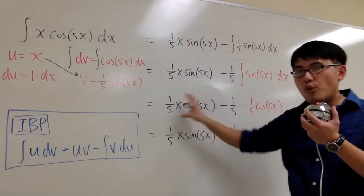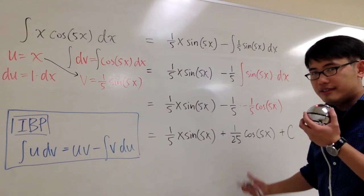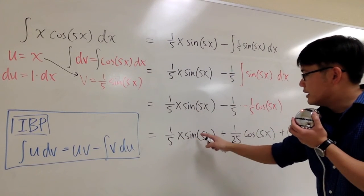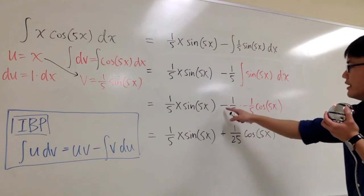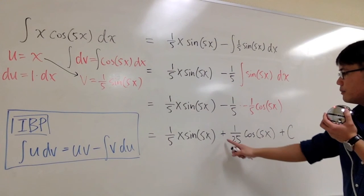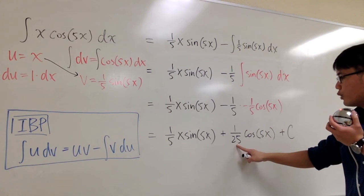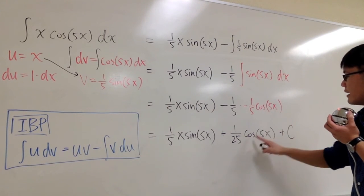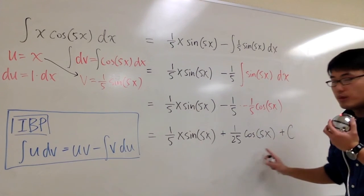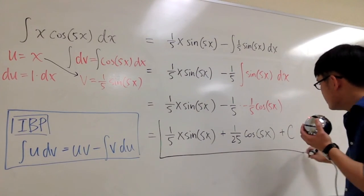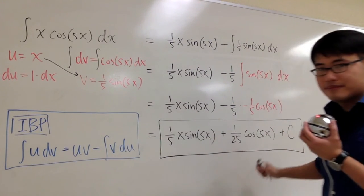And we are done. There's no more integrations that we need to do. The answer is, the first part stays the same. 1/5 x times sine of 5x. And then the second part is negative times negative becomes positive. 1/5 times 1/5, we have the 1 over 25. Cosine of 5x, right here. We are done with the function part. And I just attach a plus C at the end. This is the answer. So I box it. That's it.